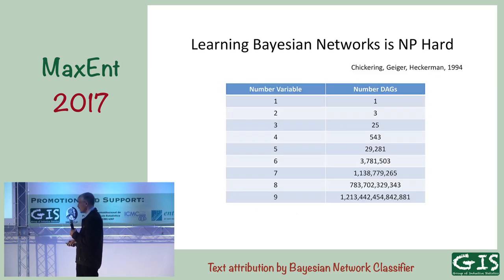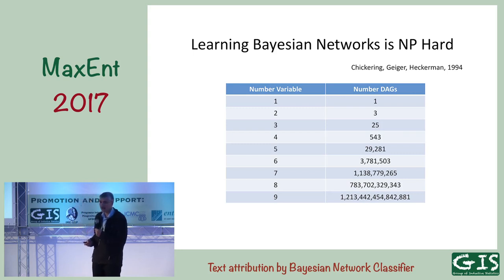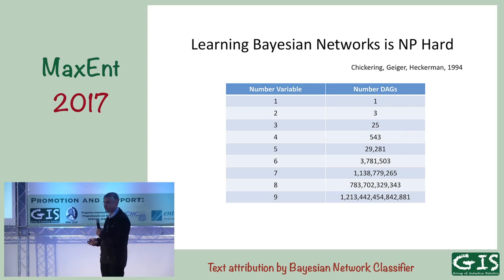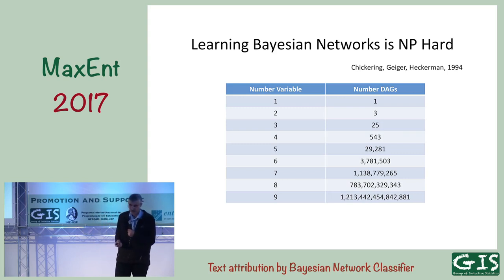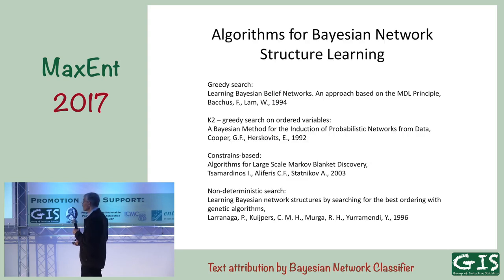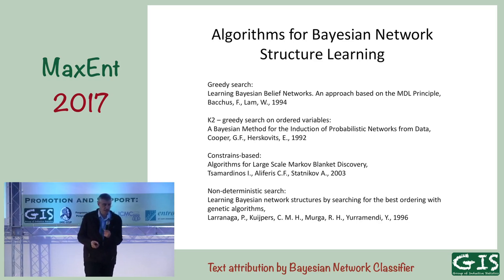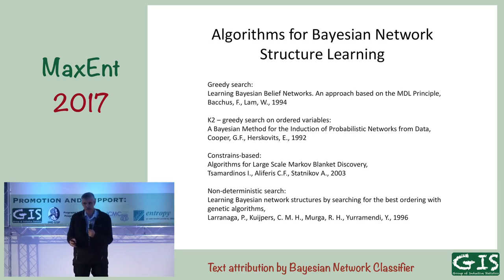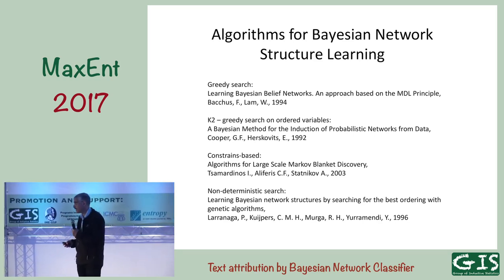The problem is that we can't enumerate all networks because the number increases super-exponentially. Practically, we can calculate for seven or maybe eight node networks, and then we stop because we just can't enumerate all of them. Therefore, people start to use different greedy algorithms, which is the classical approach, or genetic algorithms, or other deterministic and non-deterministic algorithms.